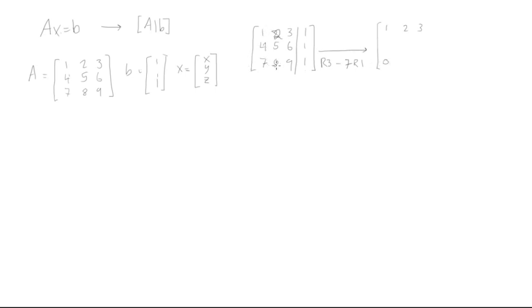So row 3 minus 7 times row 1: 7 minus 7 is 0, 8 minus 14 is negative 6, and then 9 minus 21 is going to equal minus 12. On this side we get 1 minus 7 is negative 6.